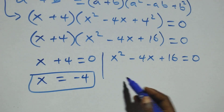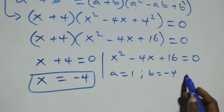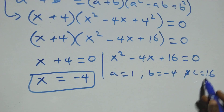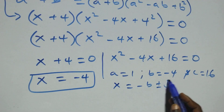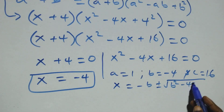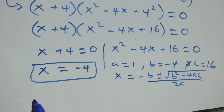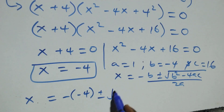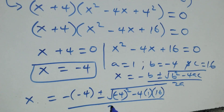Then we have a quadratic equation where a equals to 1, b equals to minus 4, and c equals to 16. Applying the quadratic formula, x equals to minus b plus or minus square root of b squared minus 4ac over 2a. This gives x equals to minus of minus 4 plus or minus square root of minus 4 squared minus 4 times 1 times 16 over 2 times 1.